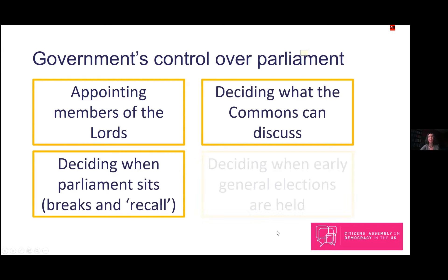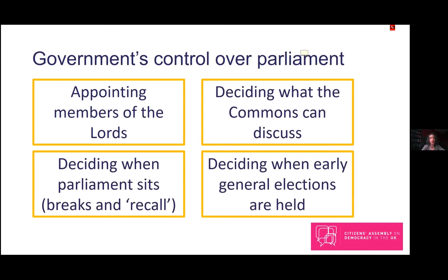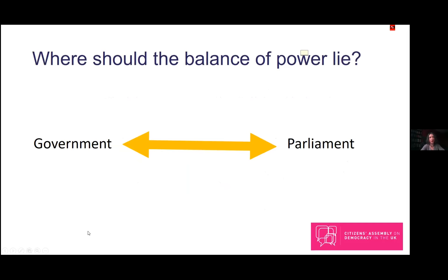Lastly, there's a debate going on about who should control the timing of general elections. In the UK we have a general election at least every five years. The question is whether it should be possible for the Prime Minister to trigger an early general election on their own — which formally requires asking the Queen to call the election, but she has little ability to refuse — or whether the Prime Minister's proposal should require the approval of the House of Commons. The power used to lie with the Prime Minister alone, and this was changed to introduce a degree of parliamentary control, but the question now is whether it should be changed back. On all of these points, there are arguments in favour of the government having control over the House of Commons, but also arguments that the House of Commons should have this control instead.